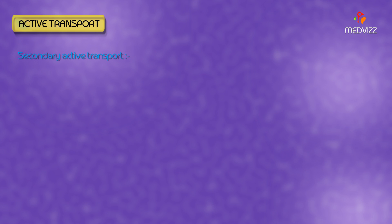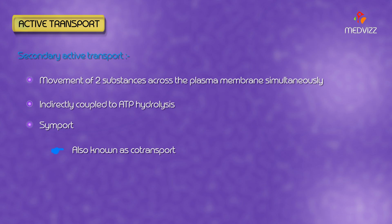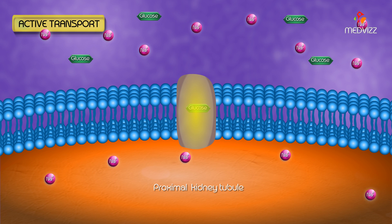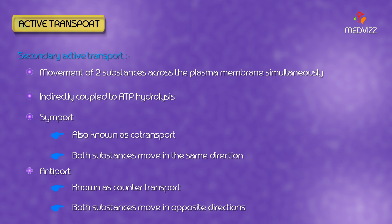Secondary Active Transport. Movement of two substances across the plasma membrane simultaneously, which is indirectly coupled to ATP hydrolysis. Symport, also known as co-transport: both substances move in the same direction. For example, sodium and glucose in the proximal tubule of the kidney.